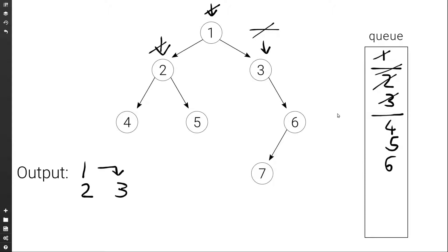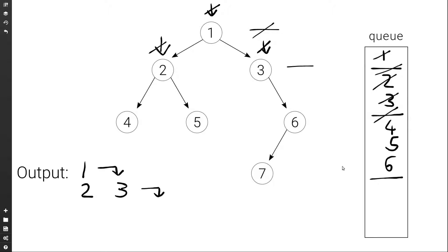Then we go back to the queue and we set current to the front of the queue. We pop the front of the queue. This time current is a delimiter, so again we're done with this level, so we print a new line. The nodes that are in the queue are those of the next level, so we add another delimiter to the queue.